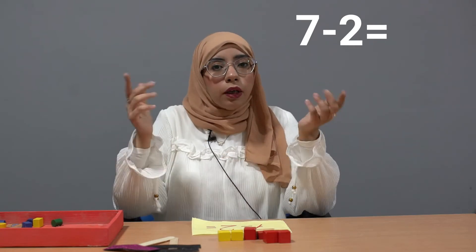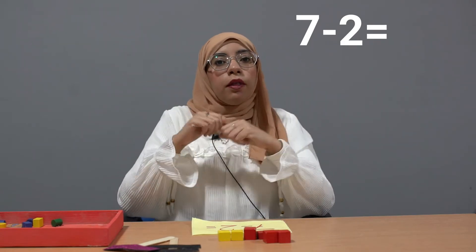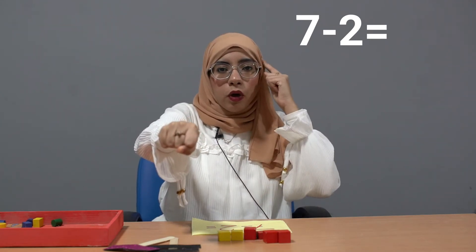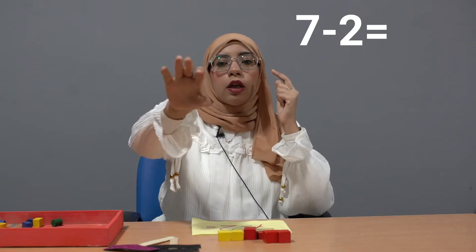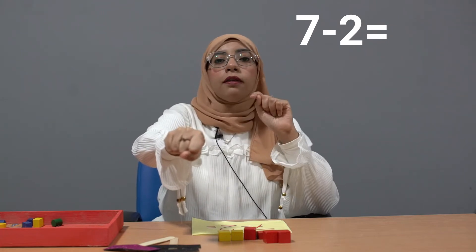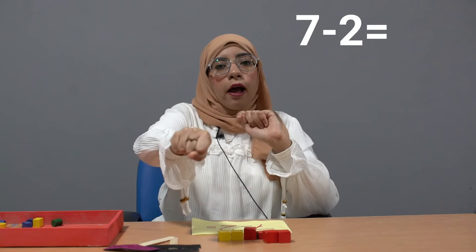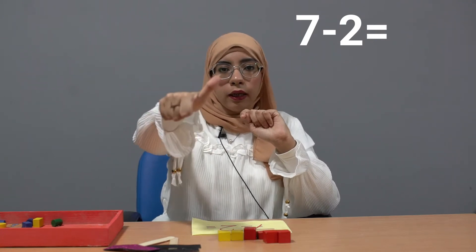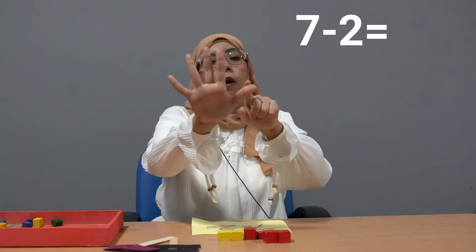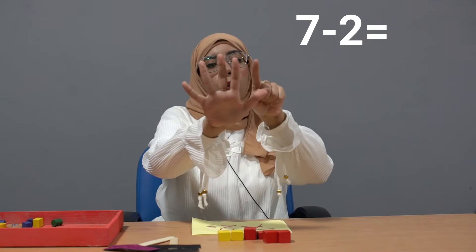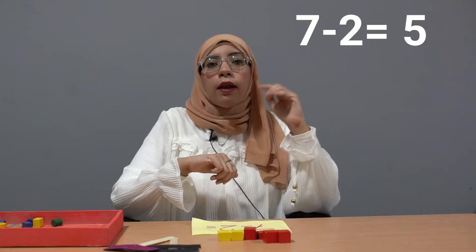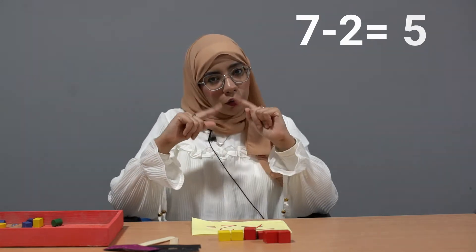Put the smaller number — two — in your mind. Close your hand, and count up to the bigger number, which is seven. After two: three, four, five, six, seven. How many fingers do we have? One, two, three, four, five. So seven minus two equals five.